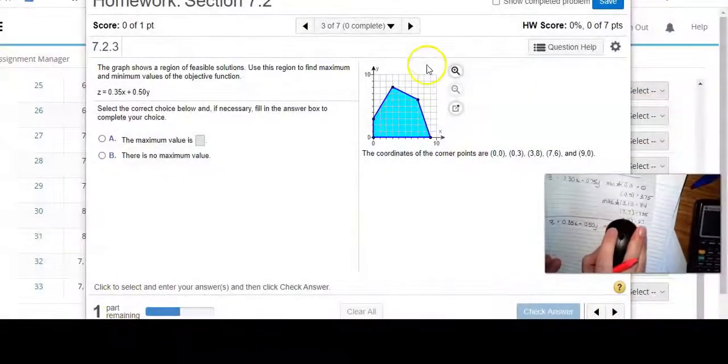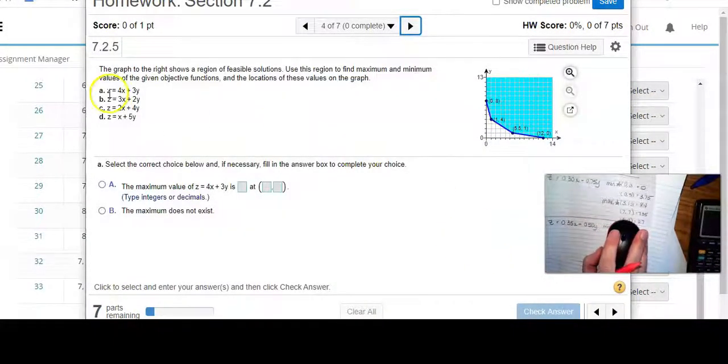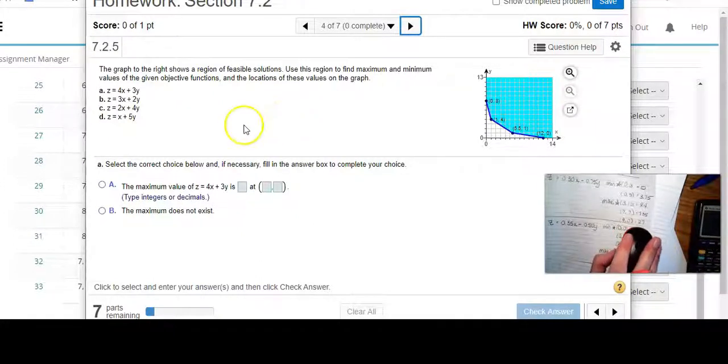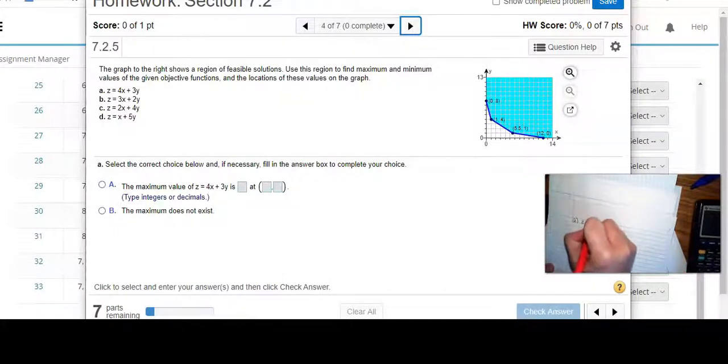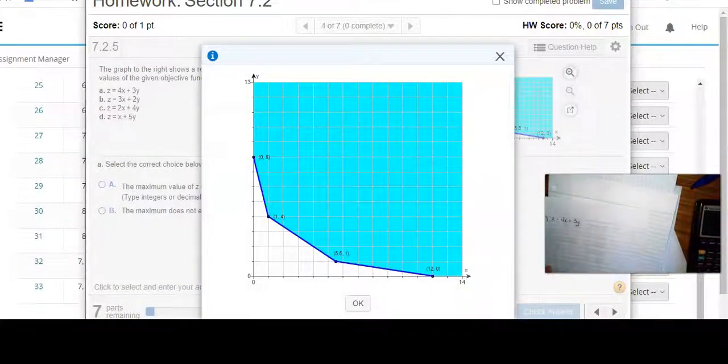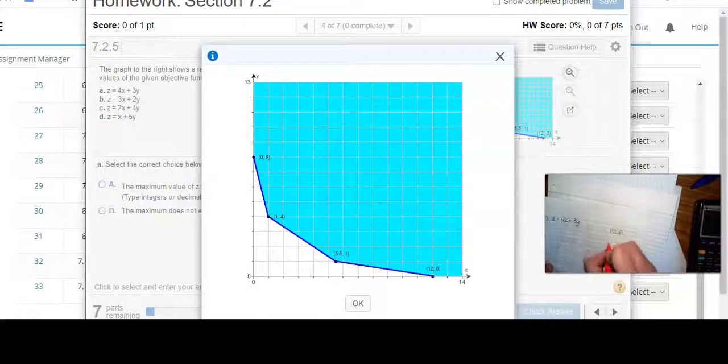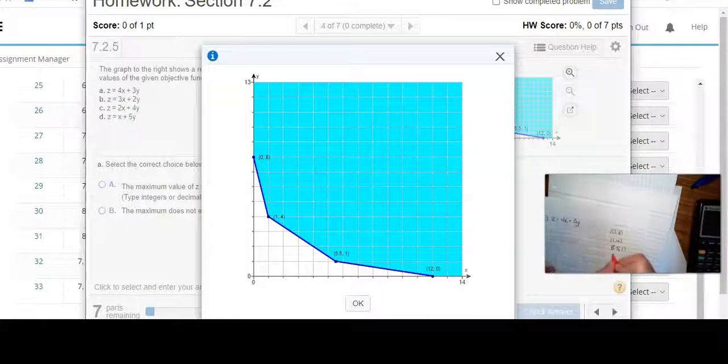Let's try it again. So this time, use the graph to the right, which shows a region of feasible solutions. Use this region to find maximum and minimum values of the given objective functions and the locations of these values on the graph, which means we're going to do the exact same thing four times with these four points. So the first one, our objective function is z equals 4x plus 3y. And I'm actually just going to do the first one with you because you can figure out the other ones. When I look at these points, I've got a point of 0,8, I've got a point at 1,4, I've got a point at 5.5,1, and I've got a point at 12,0.